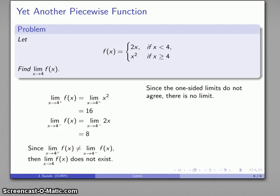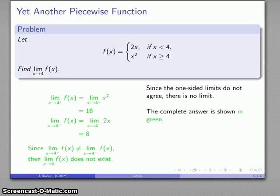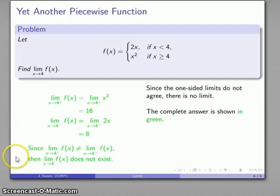Since the one-sided limits are not equal, the unqualified limit does not exist. The complete answer, shown in green, includes: the limit from above, the limit from below, and the observation that because the limits are different, the unqualified limit does not exist.